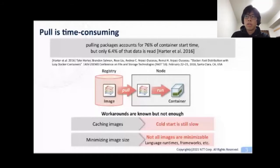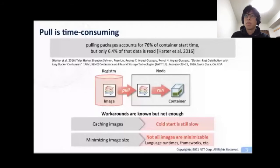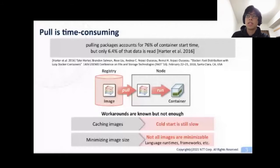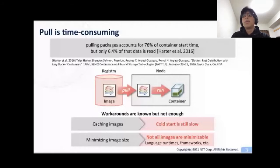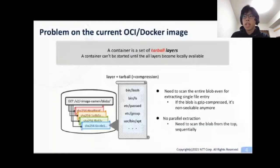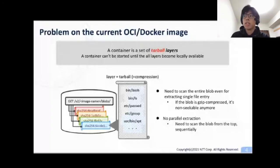Well-known workarounds are not enough in some situations. Even with caching images, the first time of container startup — so-called cold start — requires pull. And we also sometimes need to deal with big images, including language runtimes, frameworks, etc. The root cause is the current OCI/Docker standard images. Image layers are archived with tar and optionally with compression, so we need to scan the entire blob even for extracting a single file entry. Entries cannot be extracted in parallel. With tar layers, we cannot start containers until all layer contents become locally available.